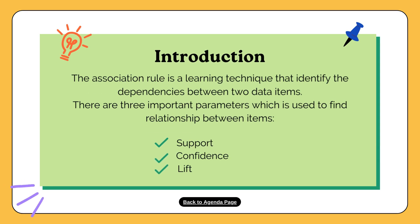The association rule is a technique that identifies the dependencies between two data items. There are three important parameters: support, confidence, and lift.